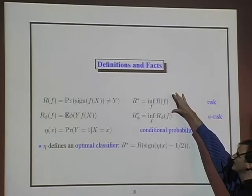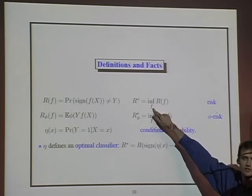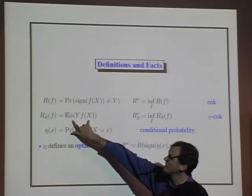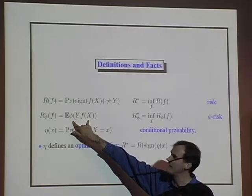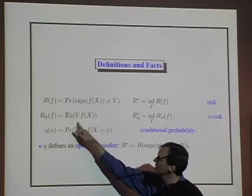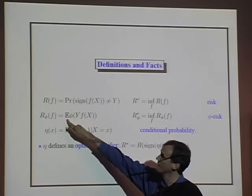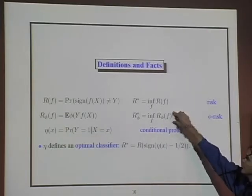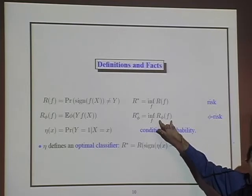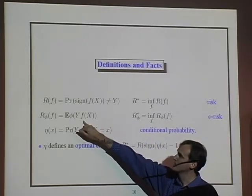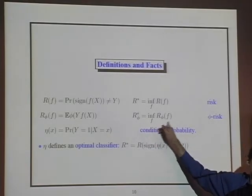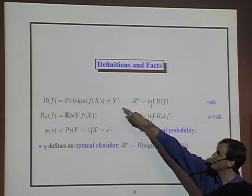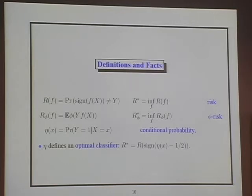There's an optimal value — the Bayes risk — which is the infimum over all measurable functions of the probability of making a mistake. This is the best we can hope for. What we're doing is driving the phi risk down — making this surrogate cost function small in expectation. We'll call that r_phi, the phi risk. There's an analogous optimal value here — the infimum over all measurable functions of the phi risk. What we'd like is to have the risk get close to the optimal, so we're making optimal decisions.